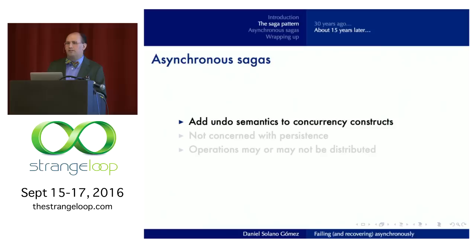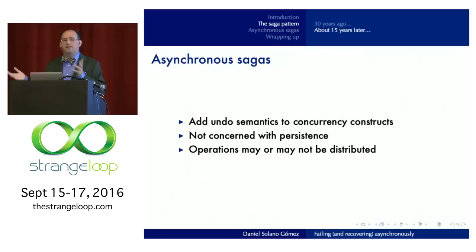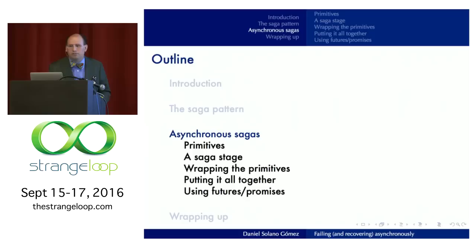I'm interested in doing asynchronous sagas. I'm mostly interested in: I have some concurrency constructs in the language or library that I like to use, but I want to add some undo semantics in there. I'm not interested in persistence — so if my program fails, I'm not going to try to restore state from some sort of persistent store. That's not the problem I'm trying to solve. Also, what I'm dealing with doesn't necessarily have to be distributed.